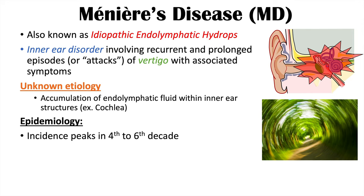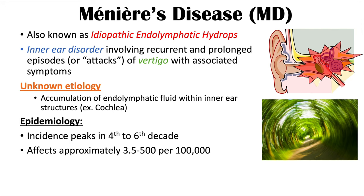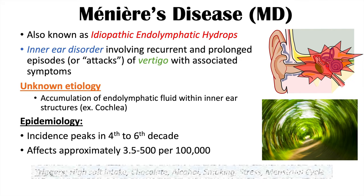If an individual does happen to have Meniere's disease, they're more likely to get this condition in the fourth to sixth decade of life, and it affects approximately 3.5 to 500 people per 100,000.